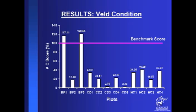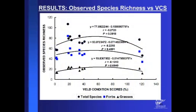Coming to the relationship between species richness and veld condition scores, I broke down the species richness by classes. The blue squares show forb species richness and solid circles show total species richness. Looking at the first curve, the correlation was negative, suggesting a negative relationship between grass species richness and veld condition scores. A similar pattern appears with forb species richness — there also seemed to be a negative relationship. The total observed plant species richness showed the same negative correlation pattern.